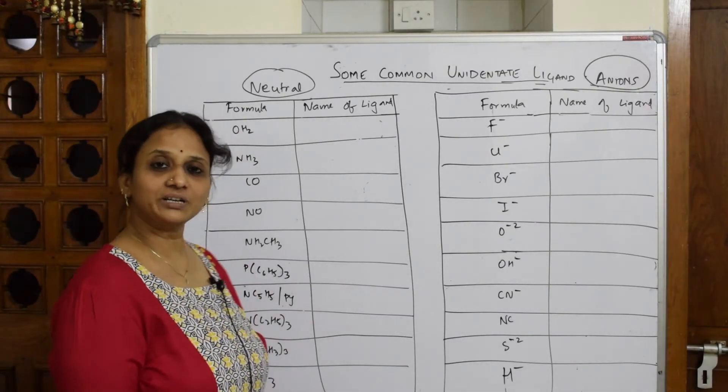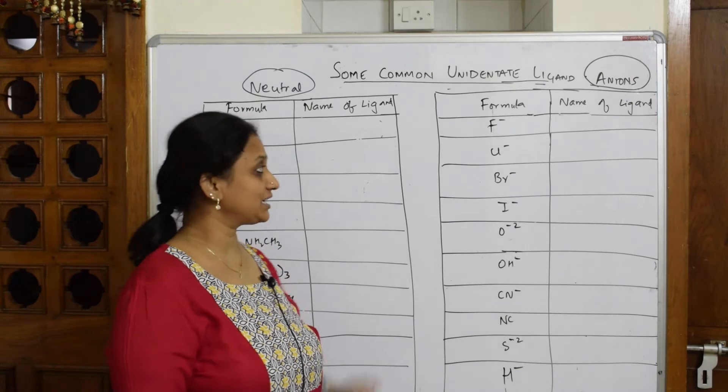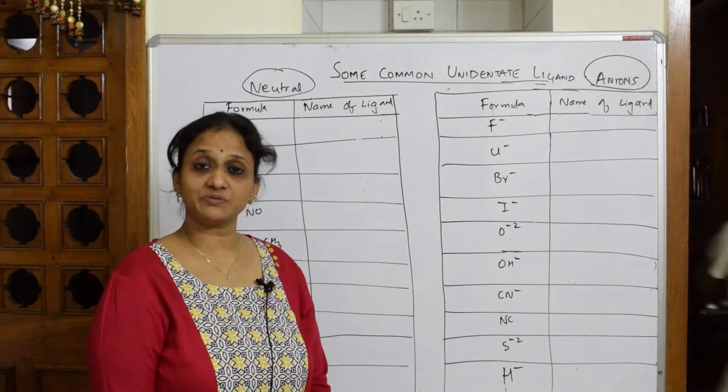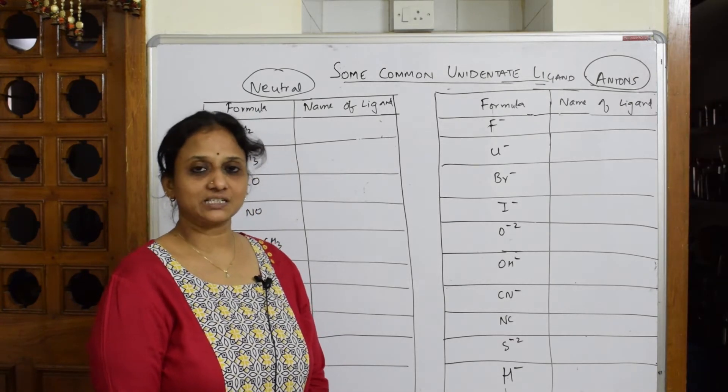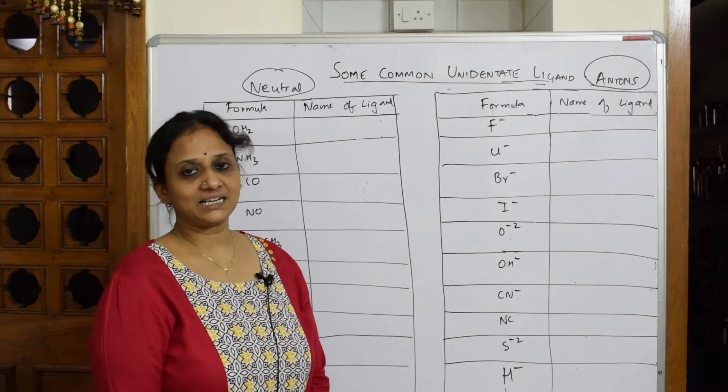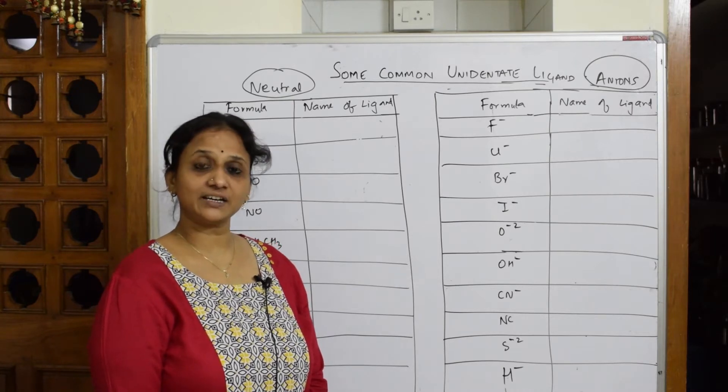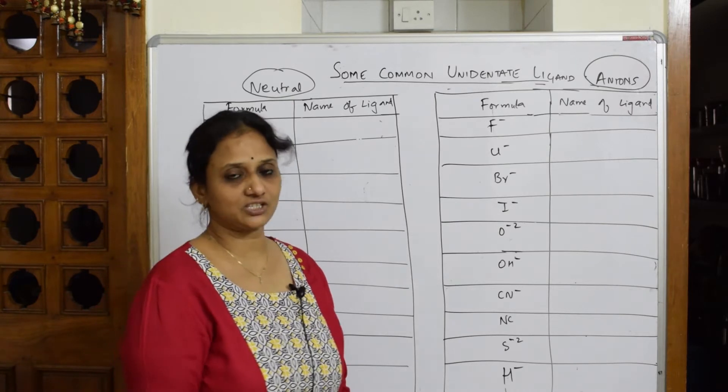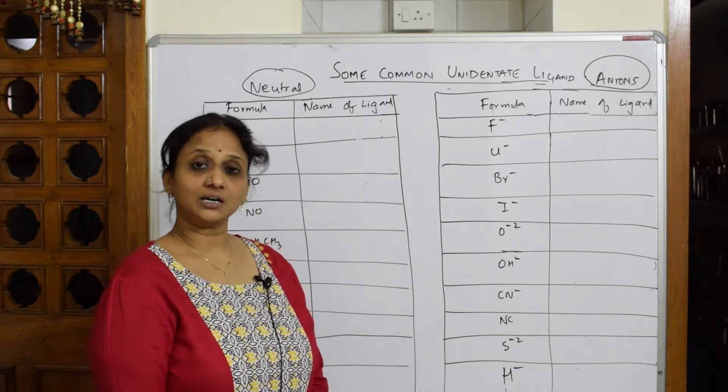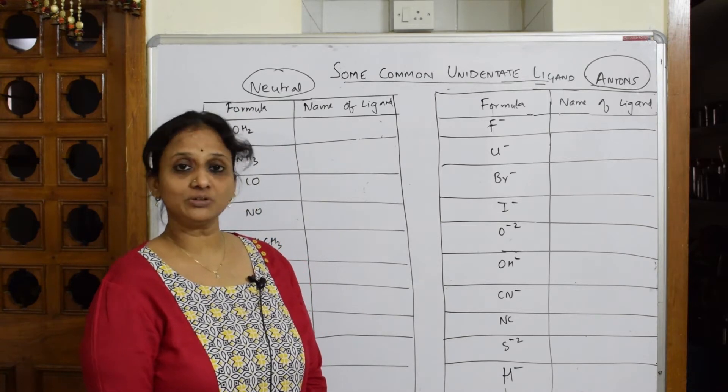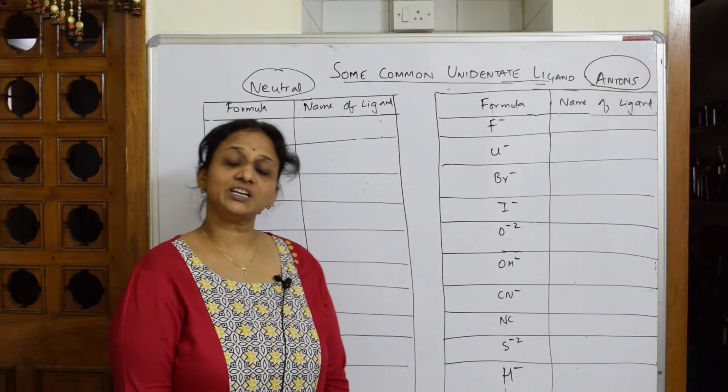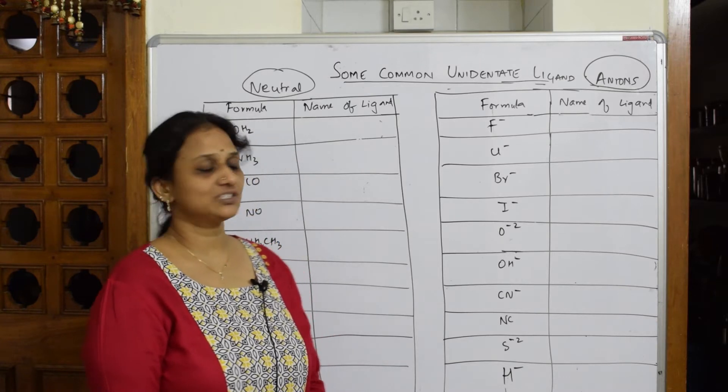Let us come back and learn the nomenclature. I'm going to start with nomenclature for the ligands. Please be very careful. In your complex, the metal atom will be given a negative ligand—that means negatively charged anionic ligand—a cationic ligand, or a neutral ligand. So you have to be very careful while naming the ligand.